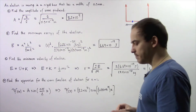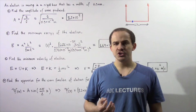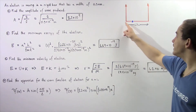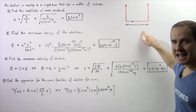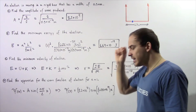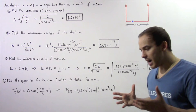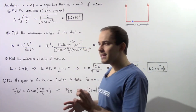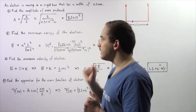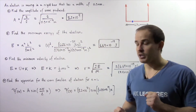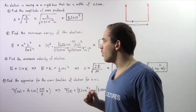Now let's move on to part B. In part B we want to find the minimum quantity of energy that an electron could have when the length of the box is fixed to 0.3 nanometers. Recall that if we fix the width of the rigid box, the energy only depends on the square of the quantum number. Because we're looking for the minimum energy, we know that corresponds to a quantum number of n equals 1.